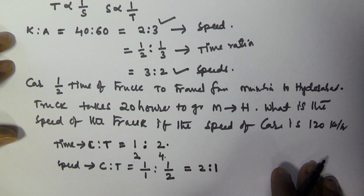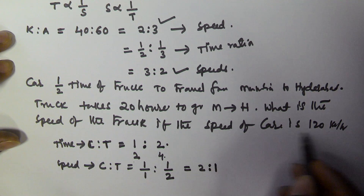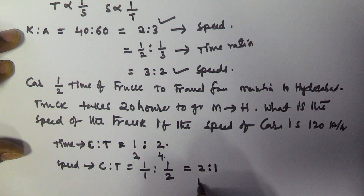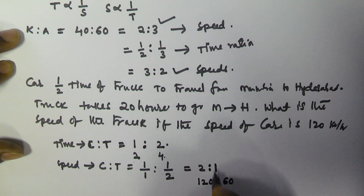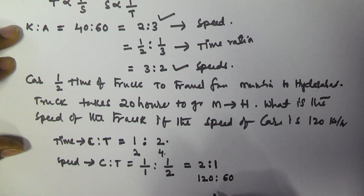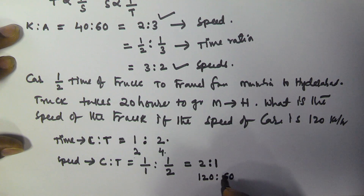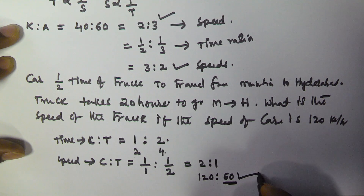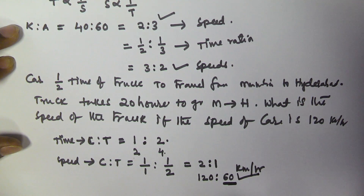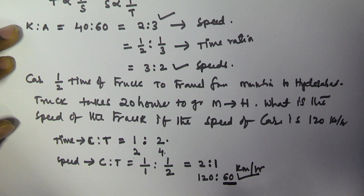The speeds of car and truck are in the ratio 2:1. Since the car's speed is 120 km/h, the truck's speed is 60 km/h. So the truck speed is 60 km per hour. I hope you got this one — thank you very much for watching, please subscribe to my channel.